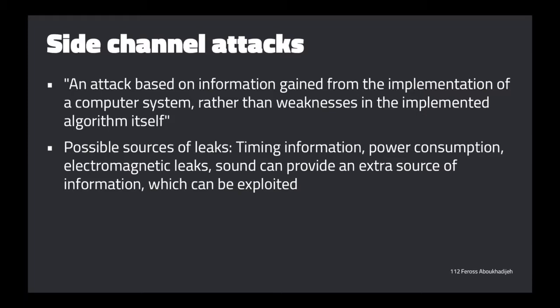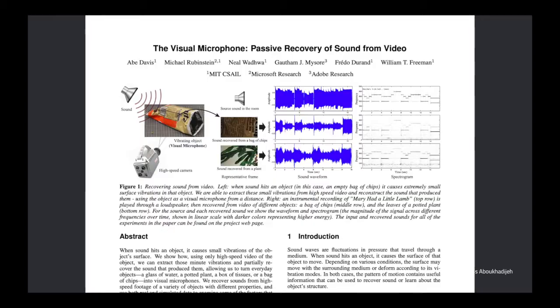Common causes of side channel leakage include timing. If something takes a certain amount of time in one case and a different time in another, and the attacker can measure that time, they can figure out what case the program is in. Here's an example from MIT researchers — very much not related to web security, but really cool. Let me set up the threat model: our goal is to build a room where we can have secret conversations and no sound escapes.